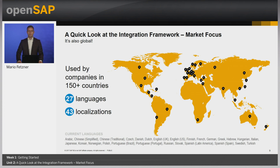SAP Business One is used by customers in over 150 countries and around the world in 27 languages. SAP Business One provides 43 localizations for the product, and partners have adapted these localizations to fit the needs of many other countries. This means you can use the integration framework to connect businesses globally.